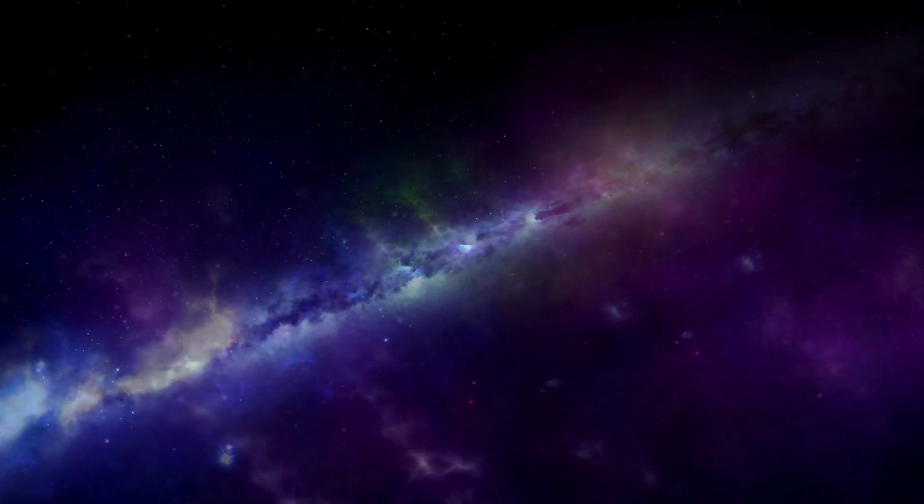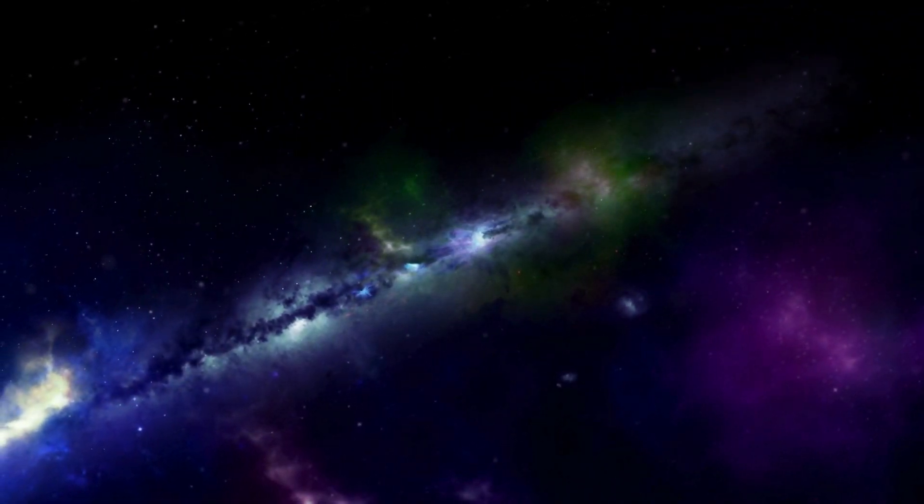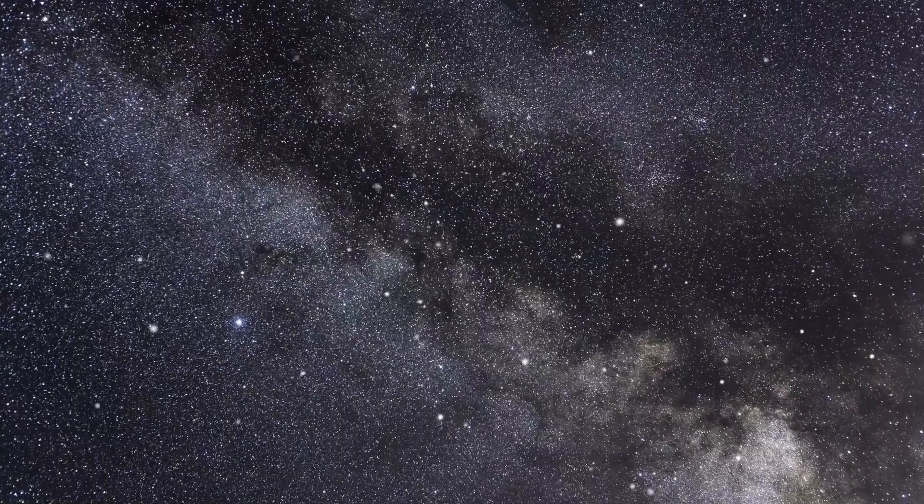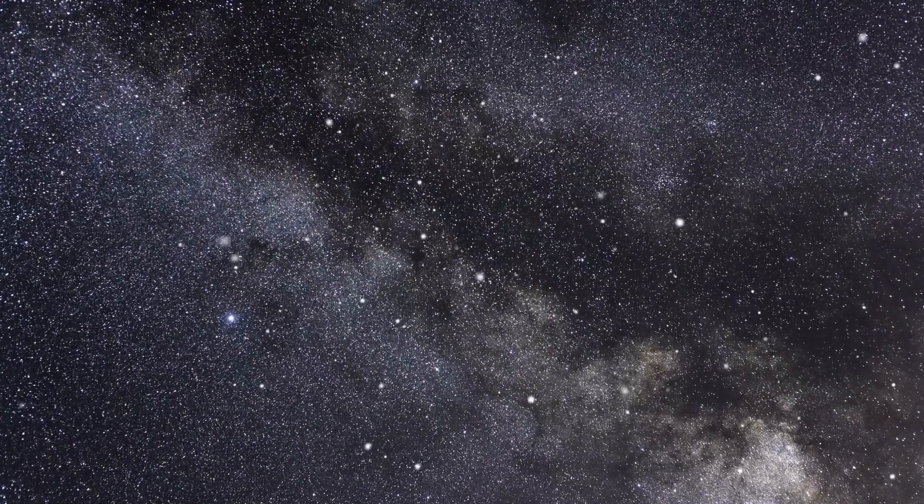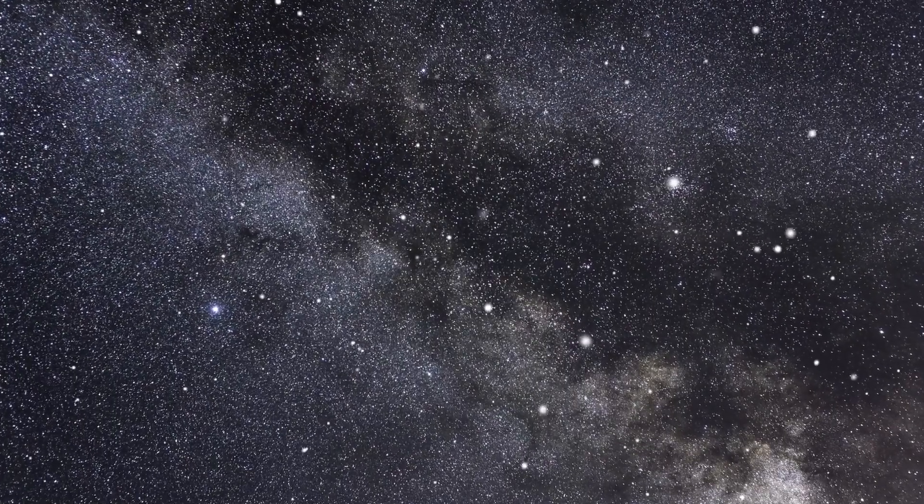The proximity of Proxima b to its star is crucial, as it exists in the habitable zone where conditions might be right for life. For us, this zone is typically where liquid water can exist on a planet's surface, a vital ingredient for life.